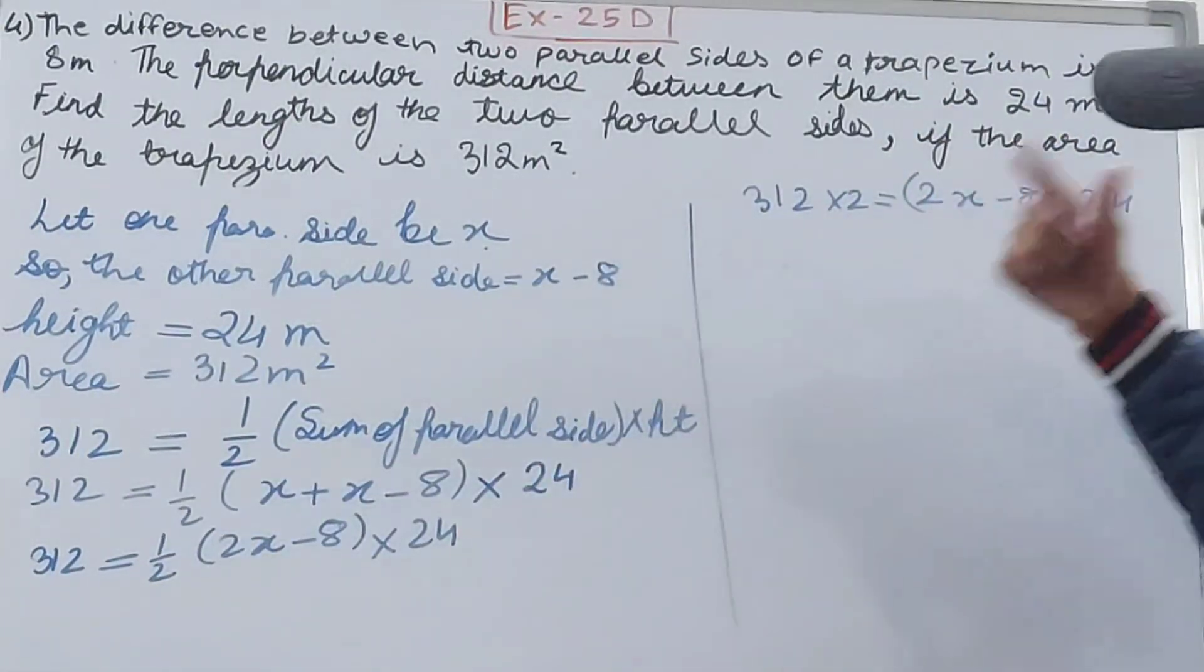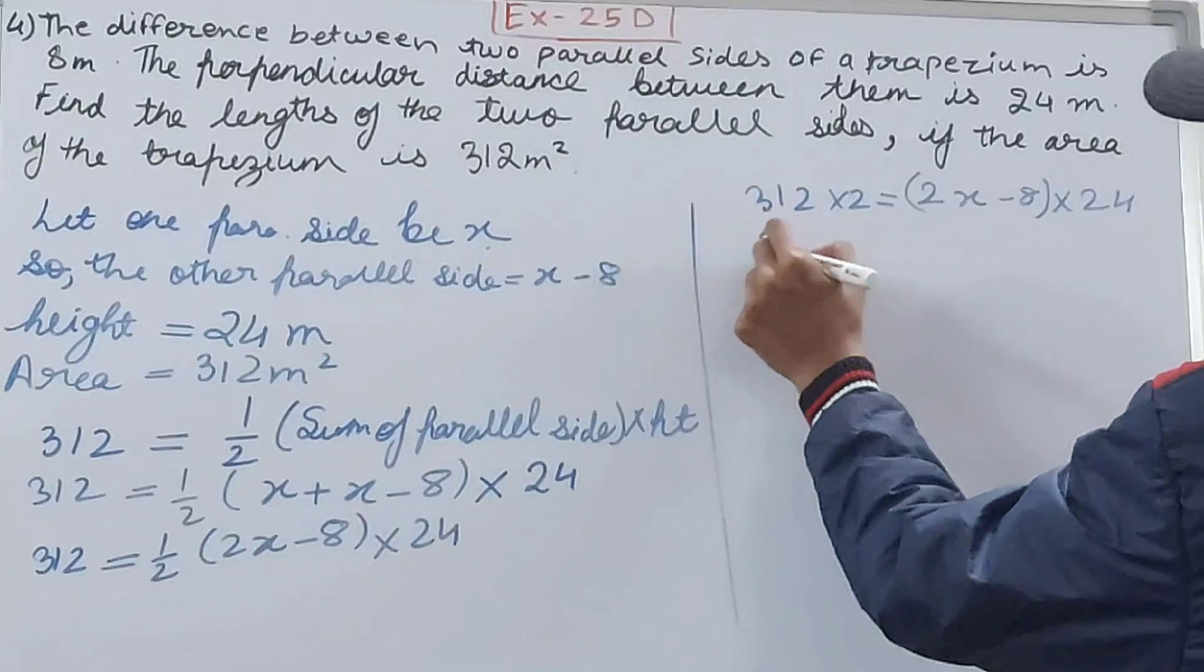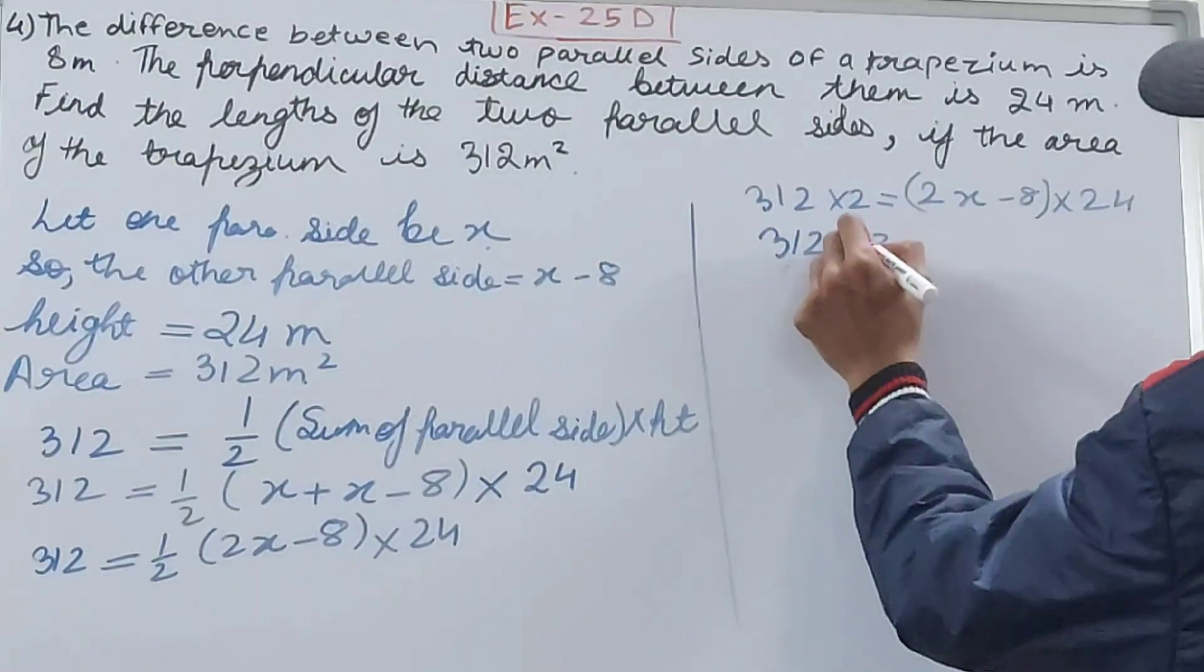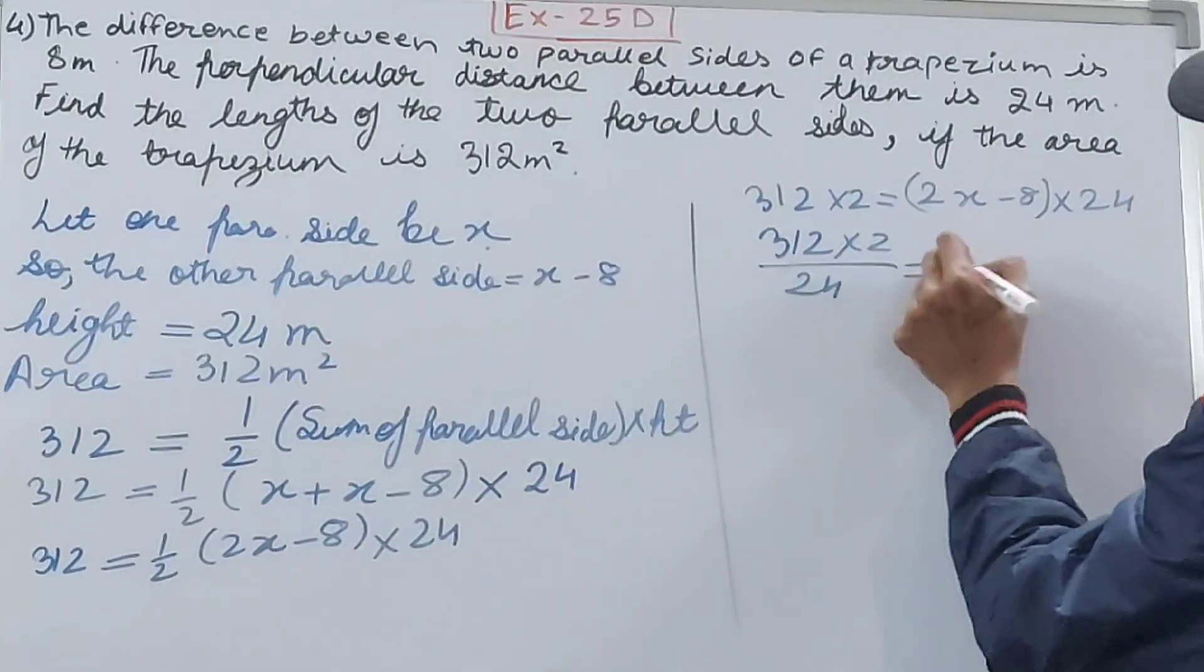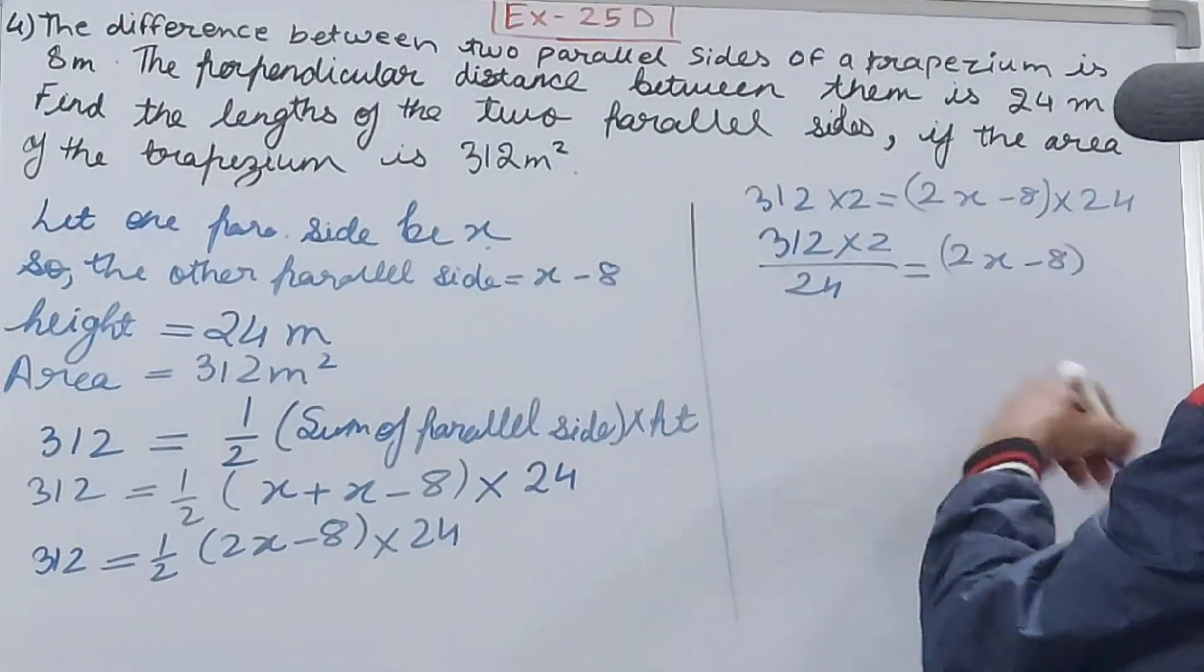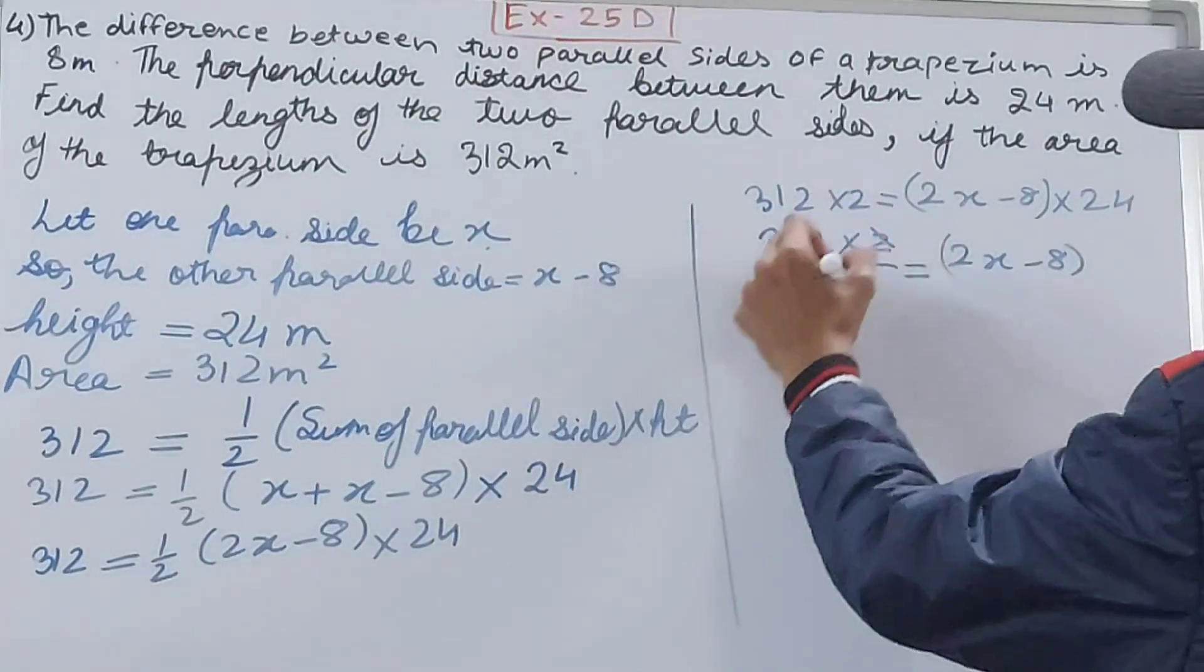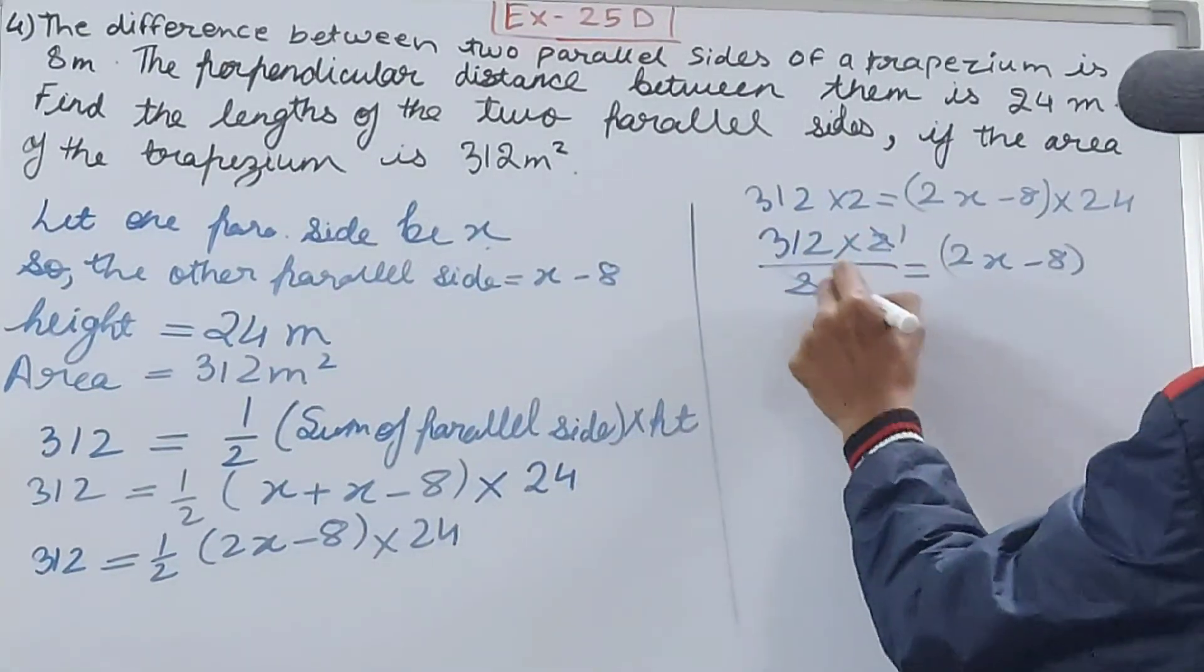1/2 will come to this side, so this becomes multiply. 312 times 2, now I'll take the 24 to this side. 312 times 2 divided by 24 equals 2X minus 8.